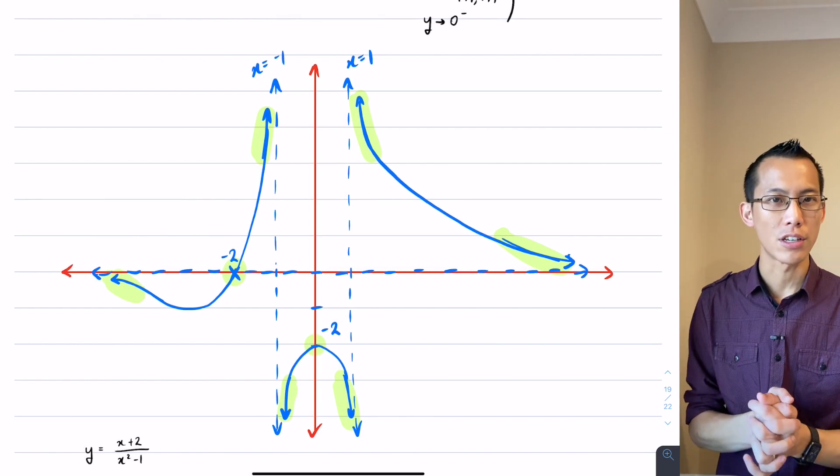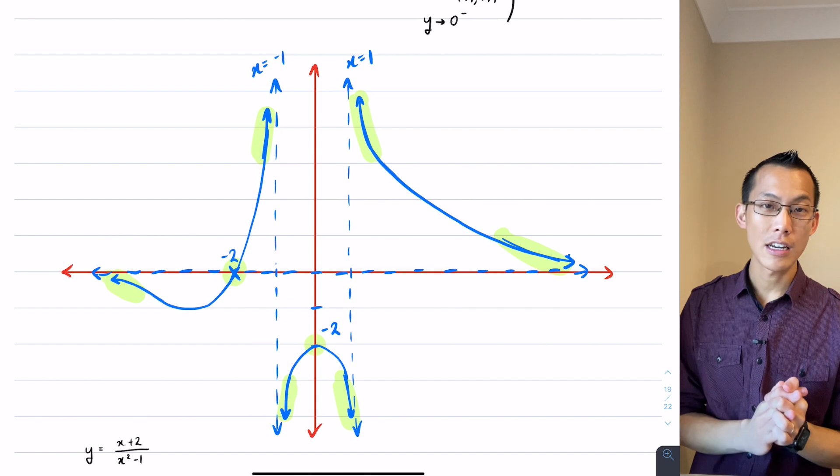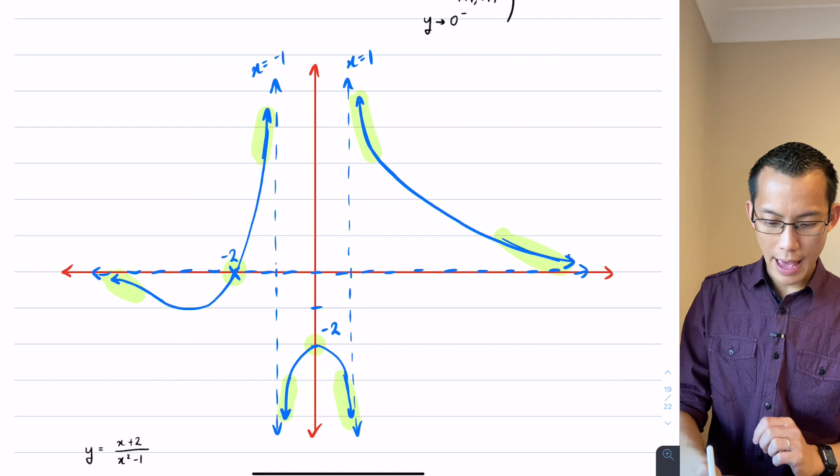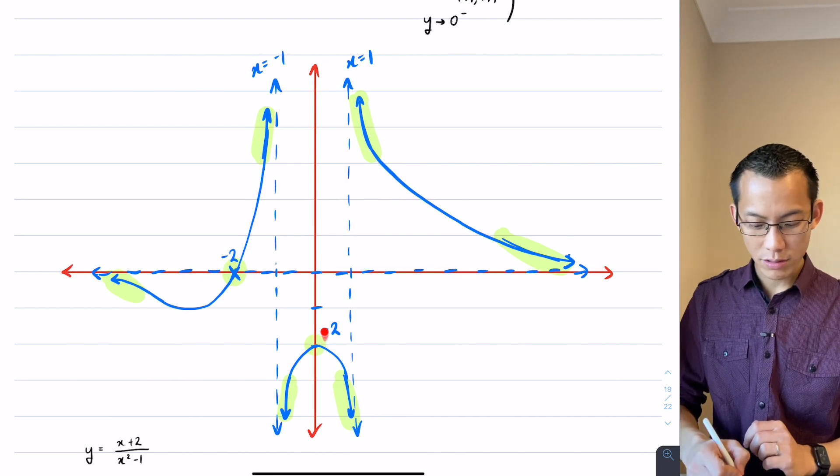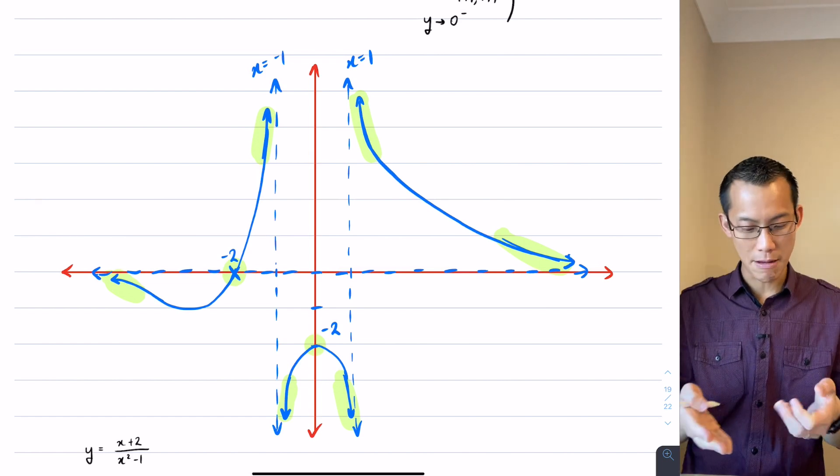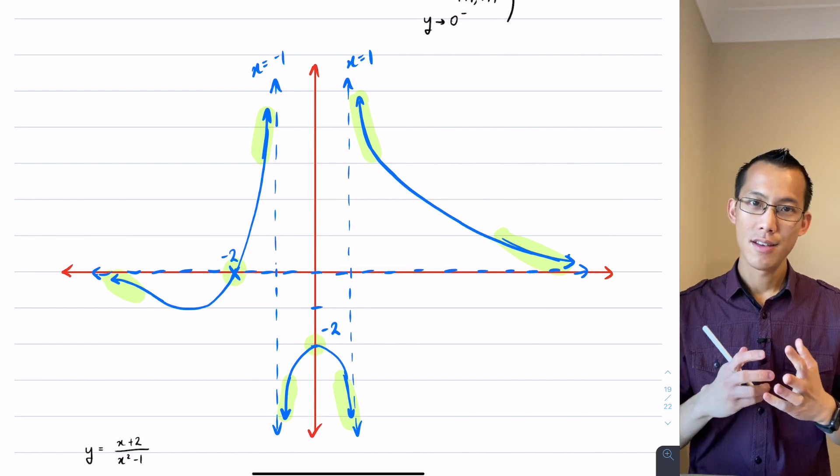That's worth pointing out. I don't need any points for scale on this guy, unlike our first hyperbola, because you've got both an x intercept over here and also a y intercept. So you've got a vertical and a horizontal scale implied by those coordinates. So I'm done.